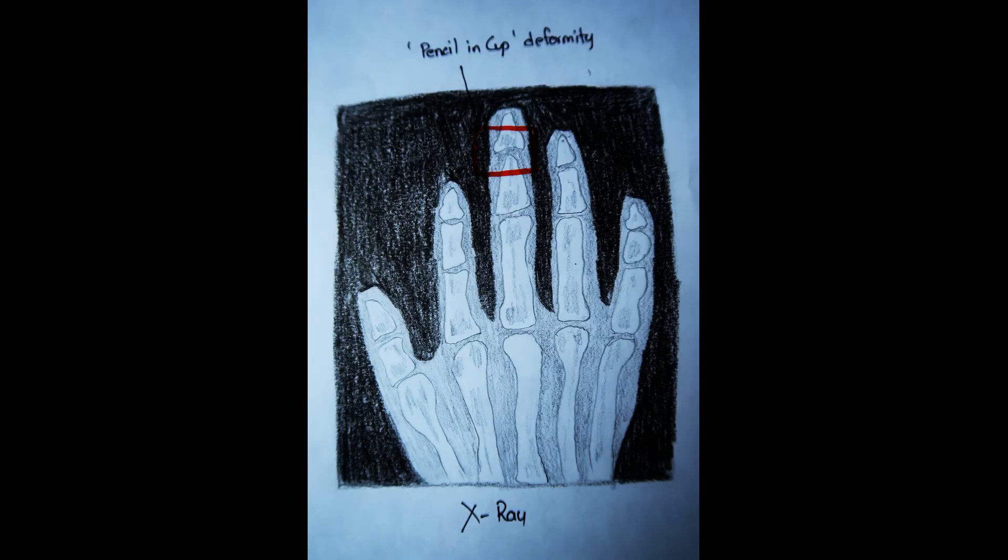Another typical feature of psoriatic arthritis is pencil and cup deformity of distal interphalangeal joints in the x-ray. The middle phalanx becomes sharpened as pencil and distal phalanx appears widened as a cup.